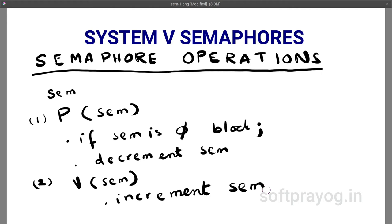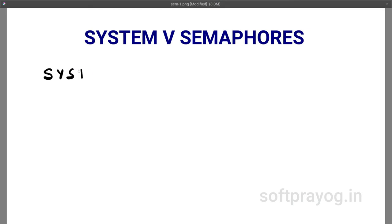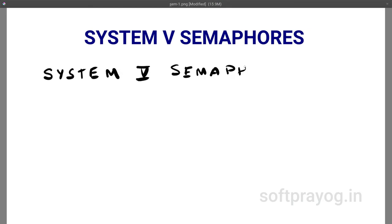Both P and V must be atomic operations — the kernel does not interrupt the processing of a P or V operation. So, semaphores and operations on these semaphores need to be provided by the kernel. There are two types of semaphores: System 5 semaphores and POSIX semaphores. In this video, I will be talking only about System 5 semaphores.